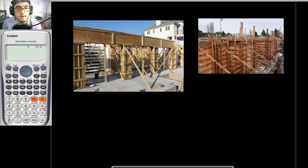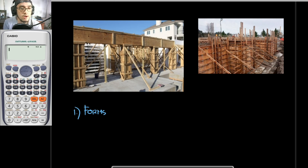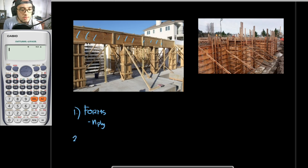In formworks estimation, the quantities we estimate are: first, the forms itself. Forms or formworks is the material in contact with your fresh concrete — in this case, the plywood. So we estimate the number of plywood. The second thing to estimate is the bracing.